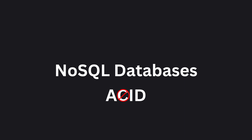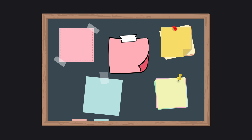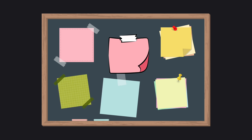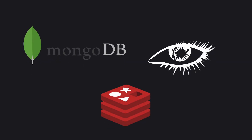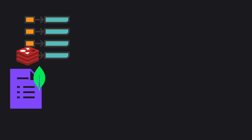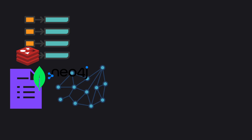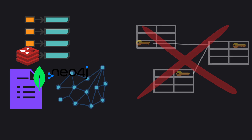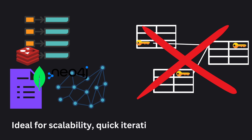We also have NoSQL databases, which drop the consistency property from ACID. Imagine a NoSQL database as a brainstorming board with sticky notes — you can add or remove notes in any shape or form, it's flexible. Some popular examples are MongoDB, Cassandra, and Redis. There are different types of NoSQL databases, such as key-value pairs like Redis, document-based databases like MongoDB, or graph-based databases like Neo4j. NoSQL databases are schema-less, meaning they don't have foreign keys between tables. They are good for unstructured data, ideal for scalability, quick iteration, and simple queries.